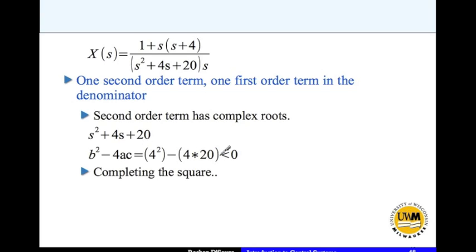So we'll have to complete the squares. We write s squared plus 4s plus 20 as s squared plus 2 times 2. That's 2 times 2 is 4. You need to have that 2 here and then whatever is left you put it in here. In this case this is 4.